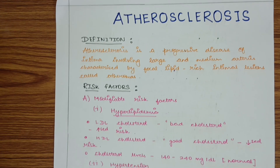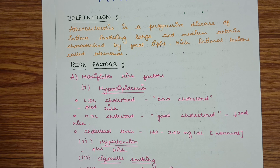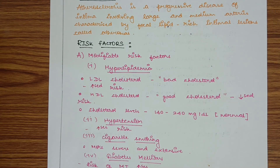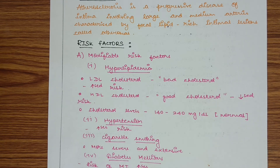Now we will see the risk factors of atherosclerosis. Risk factors include modifiable and non-modifiable risk factors. There are four modifiable risk factors: hyperlipidemia, hypertension, cigarette smoking, and diabetes mellitus. In hyperlipidemia, LDL cholesterol is known as the bad cholesterol and increases the risk of atherosclerosis, while HDL cholesterol is the good cholesterol and decreases the risk. Normal cholesterol levels are 140 to 240 mg per deciliter.